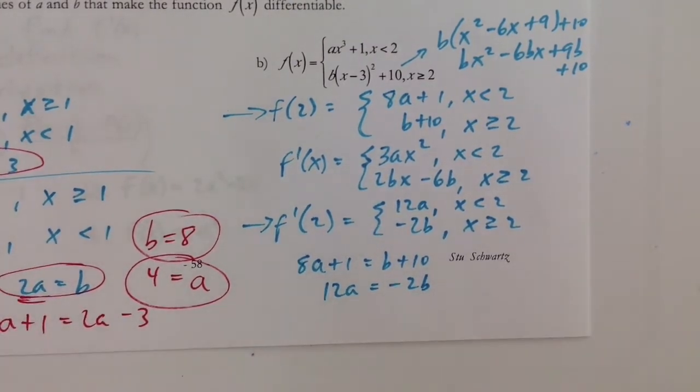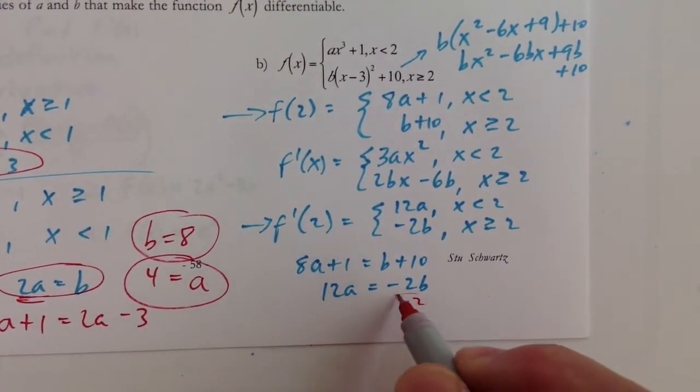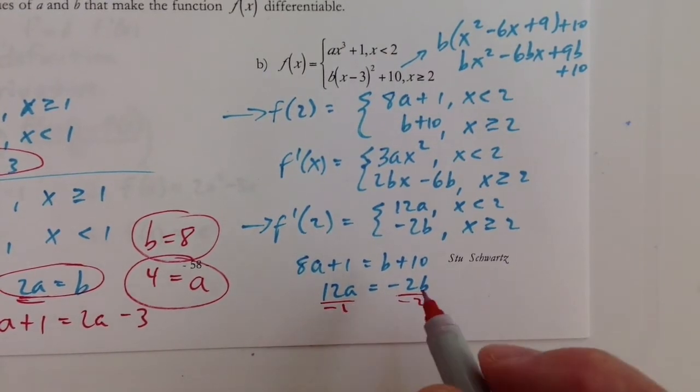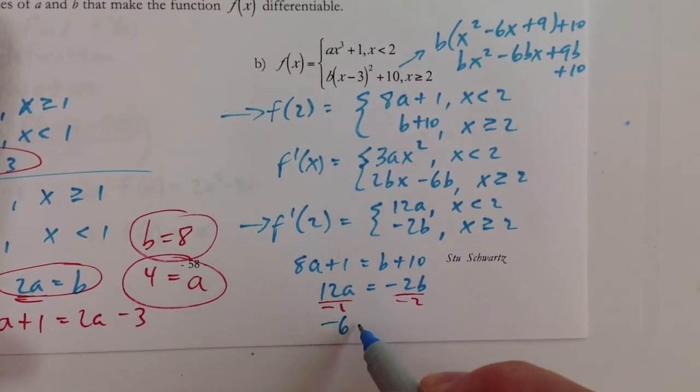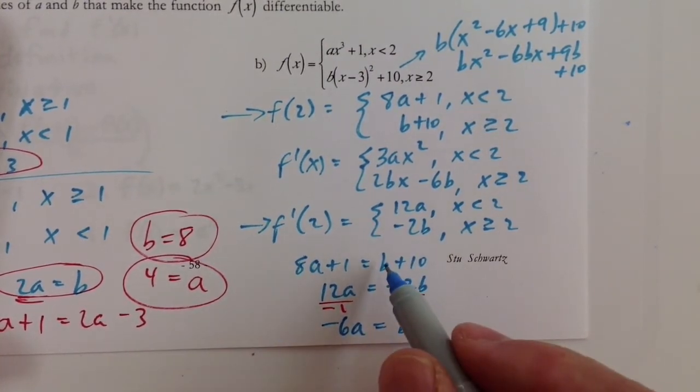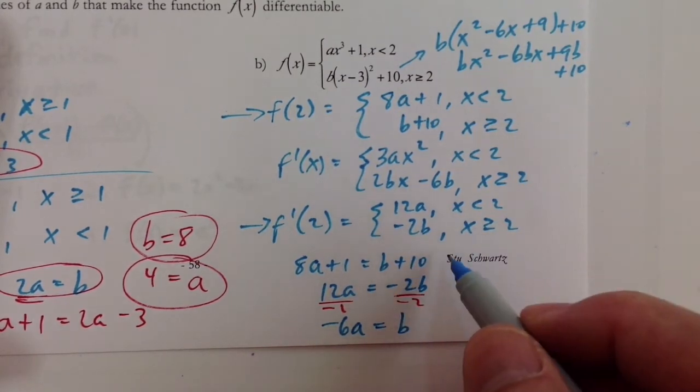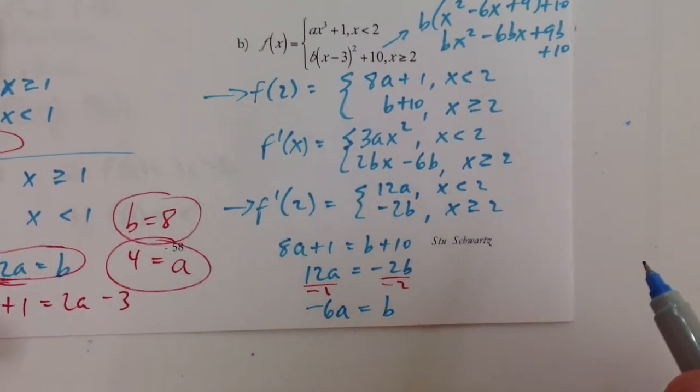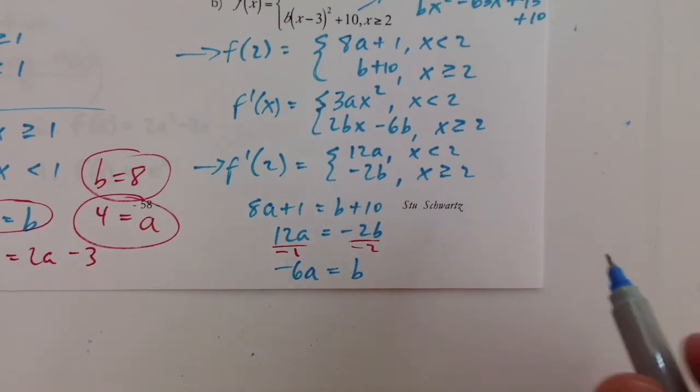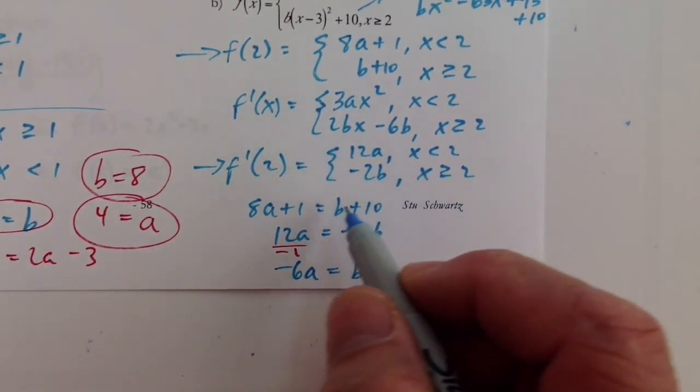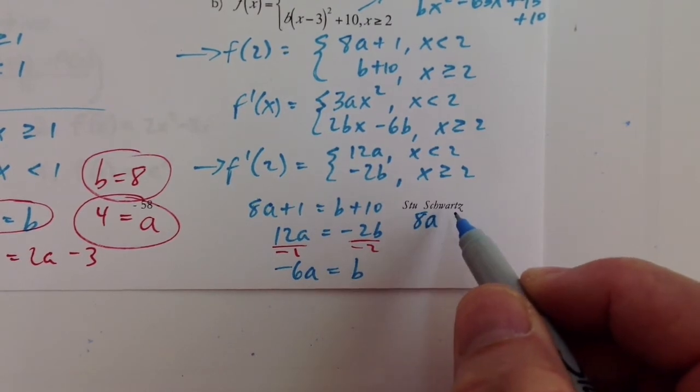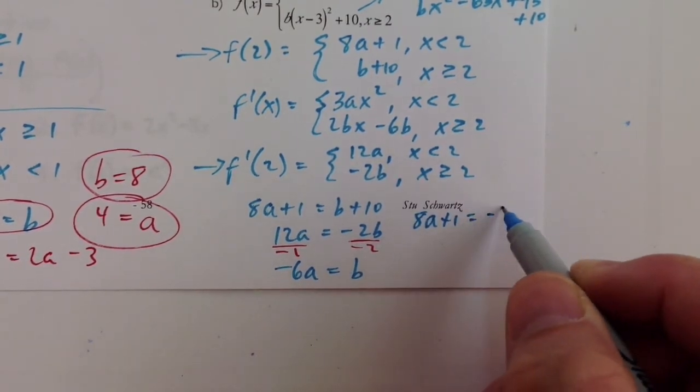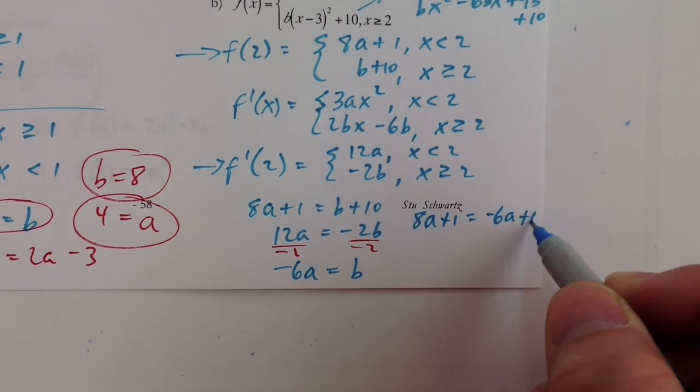So how would I solve this system of equations? I would divide both sides by negative 2, and I would get negative 6a is equal to b, and then I'd put negative 6a into that b, and we're just running out of room here, aren't we? That's okay, we'll figure it out. So for this b,